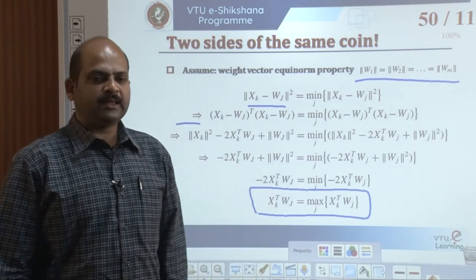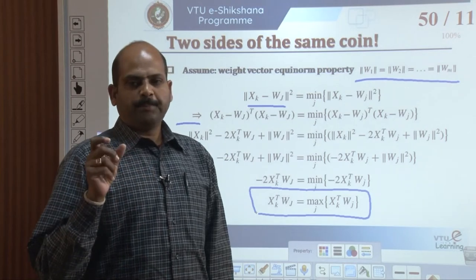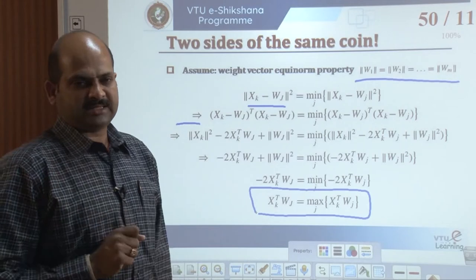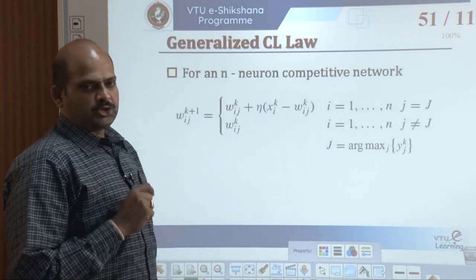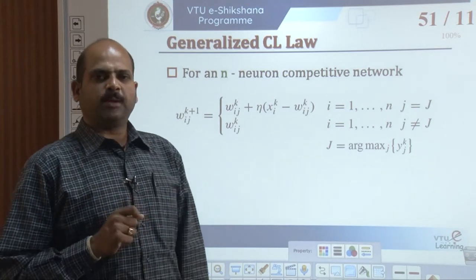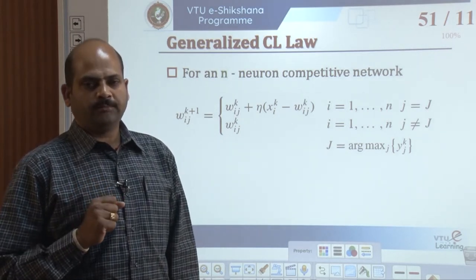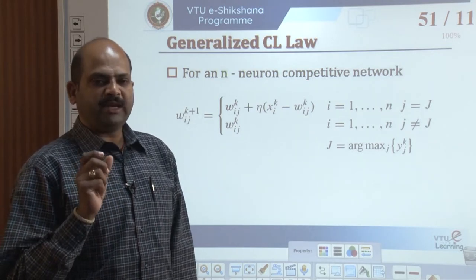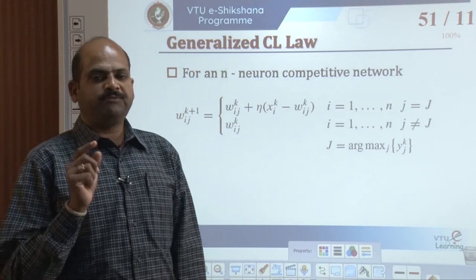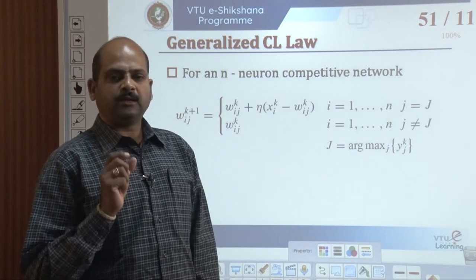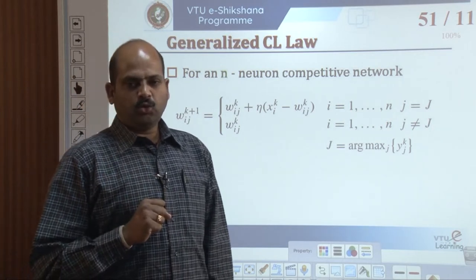For computer simulations, we simply choose the neuron index with maximum activity or minimum distance. We can generalize this principle into the competitive learning law — a generalized competitive learning law. This law requires the weight vector of the winning neuron to be made to correlate more with the input vector. Winning neurons correlate more with the input vectors.